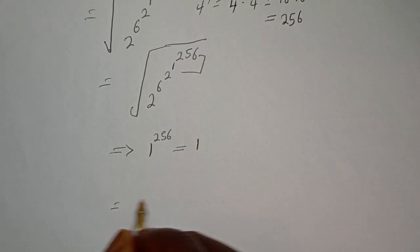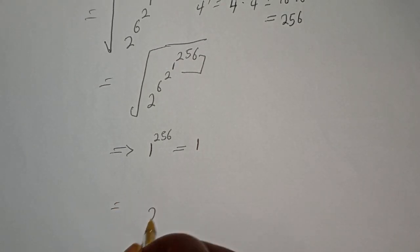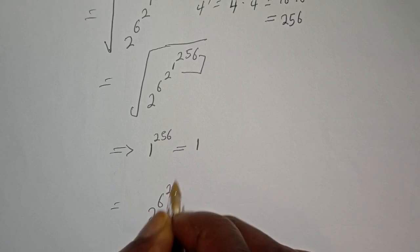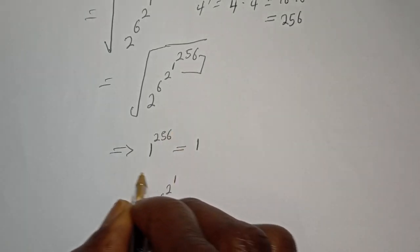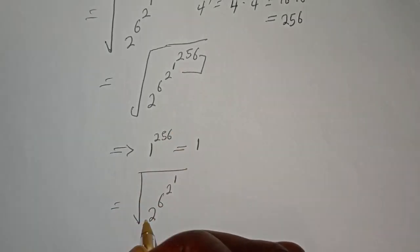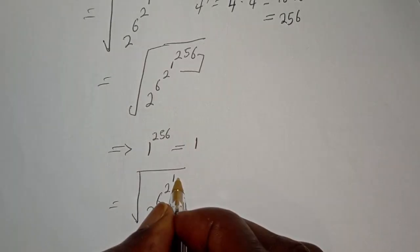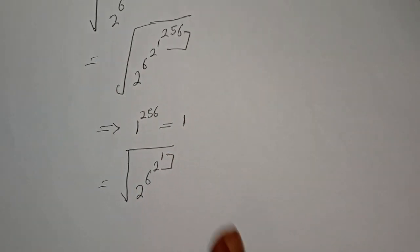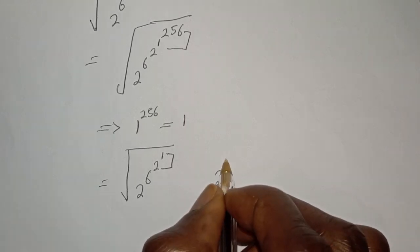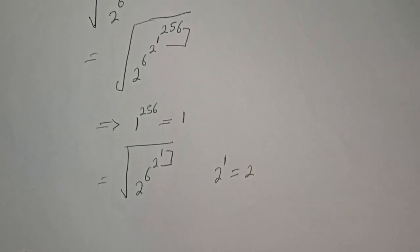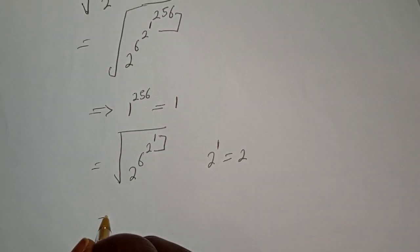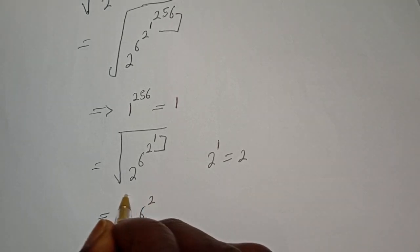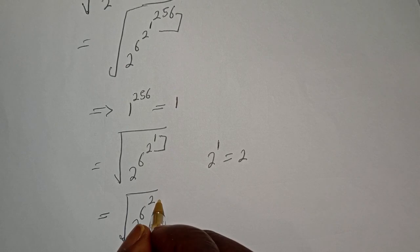Next, substitute. We have the square root of 2 raised to power 6, raised to power 2, raised to power 1. And 2 raised to power 1 is equal to 2, so this simplifies to the square root of 2 raised to power 6, raised to power 2.